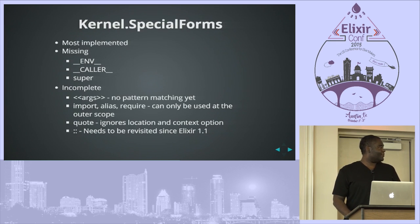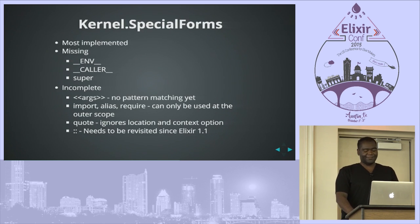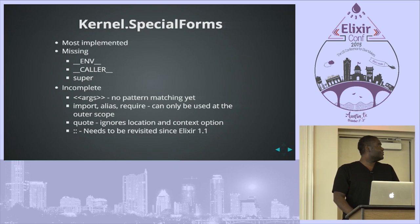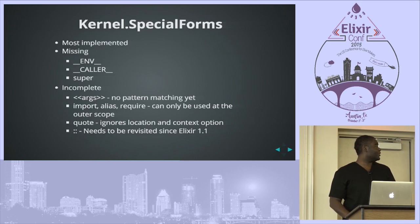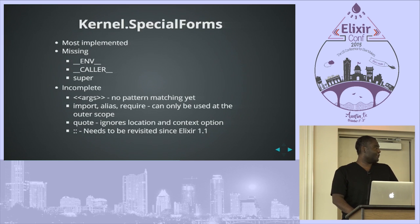The compiler right now focuses on Kernel.SpecialForms and the Kernel module — most of that is implemented. What's missing completely: __ENV__, __CALLER__, and super. What is incomplete: bit strings don't have pattern matching yet, import/alias/require can only be used at the outer scope, quote currently ignores location and context options, and the double colon — used to figure out types for bit strings — needs to be revisited for Elixir 1.1, and there's no support for type specs yet.